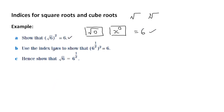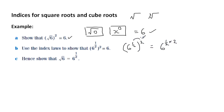Using our index laws, we can apply them in this way. We know that when we've got a number to a power raised to another power, we multiply. It doesn't matter if it's a fraction — we multiply them together. So these get multiplied together, and the half times 2 is 1. And as we know, 6 to the power of 1 is 6. So that's how we can show this.